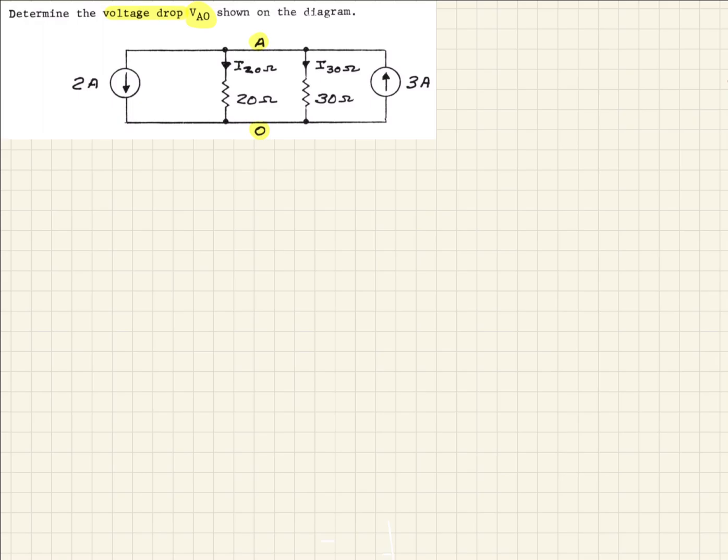In a sense, what that means is if we were to come out and draw terminals here and measure the voltage across here, what would that read? That would be our VAO.